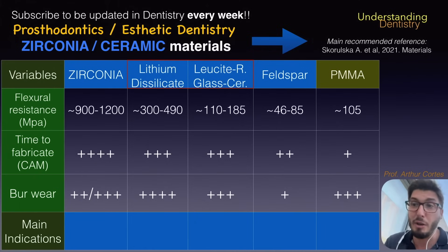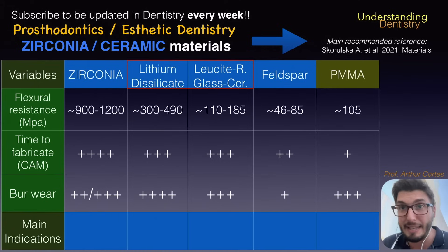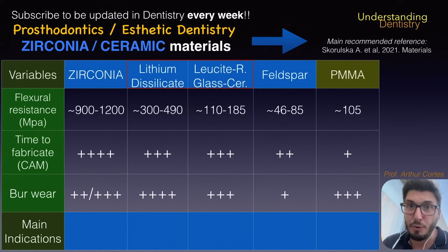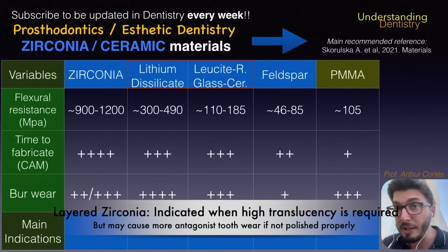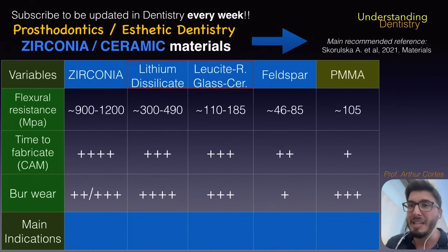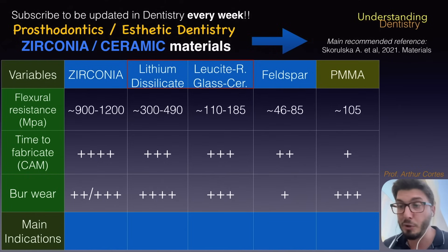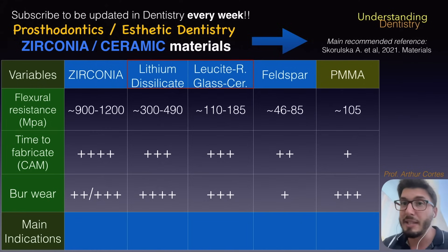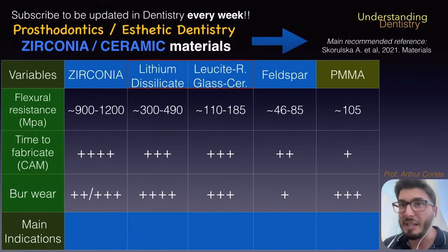You have the numbers here in megapascals. Zirconia, of course, has the highest flexural resistance. Then you have lithium disilicate with much less flexural resistance, even compared to layered zirconia. Those numbers for zirconia are for monolithic zirconia, but even if you layer ceramics on top of the zirconia framework, your mechanical resistance would still be about twice that of lithium disilicate.